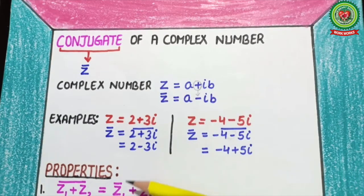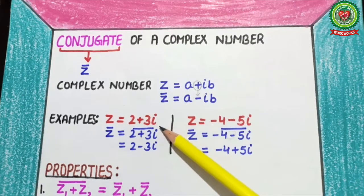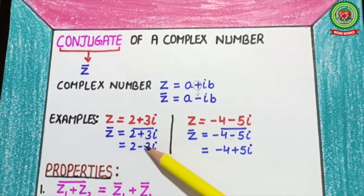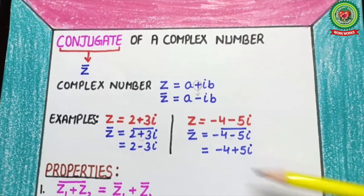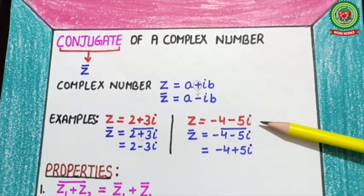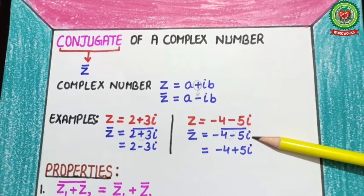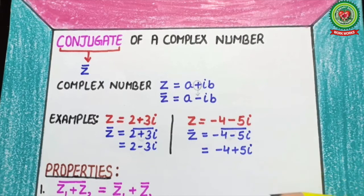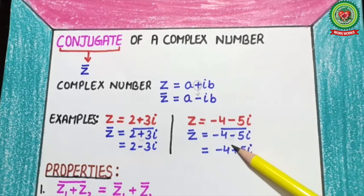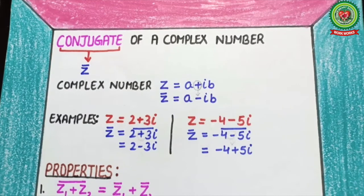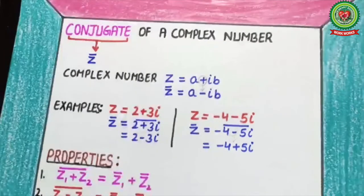For example, if z equals 2 plus 3 iota, then the conjugate of this complex number equals 2 minus 3 iota, because the middle sign is plus, so it changes to minus. Similarly, look at another example: if the complex number equals minus 4 minus 5 iota, then the conjugate equals minus 4 plus 5 iota, because the middle sign is minus, so it changes to plus.